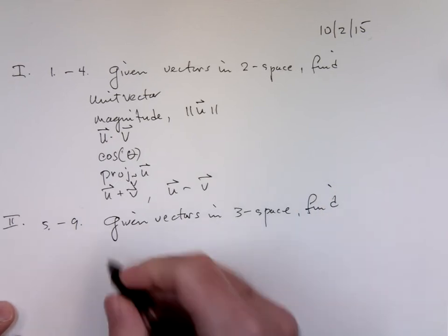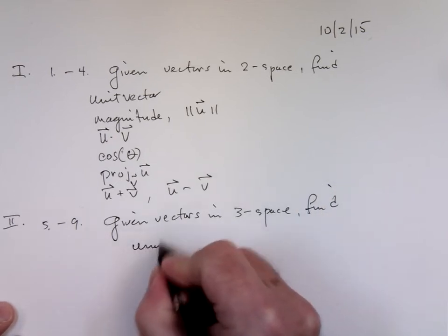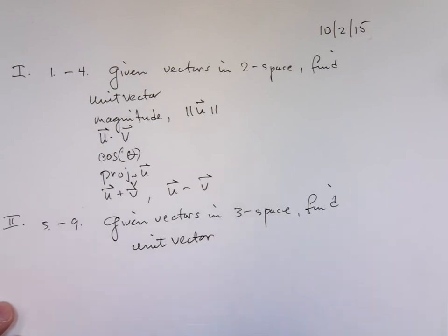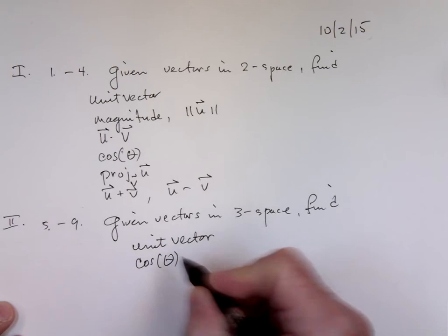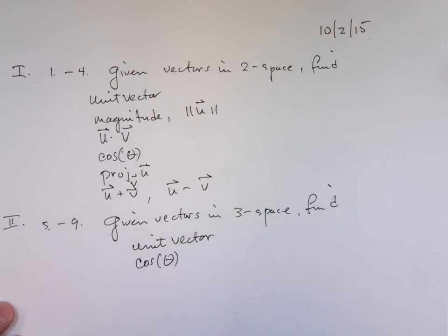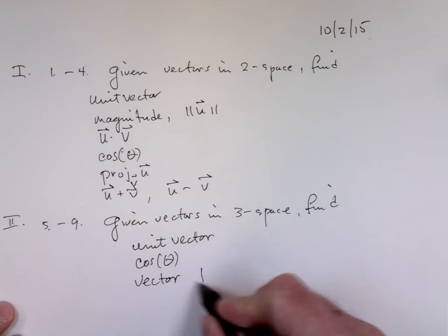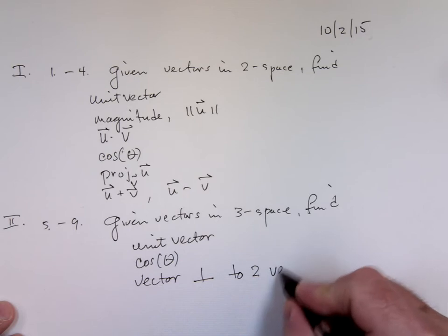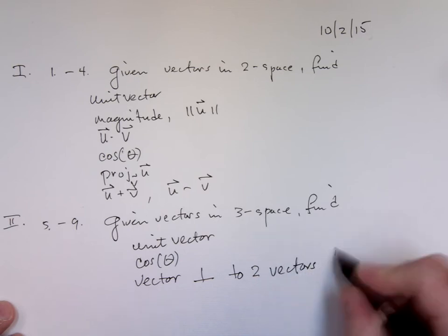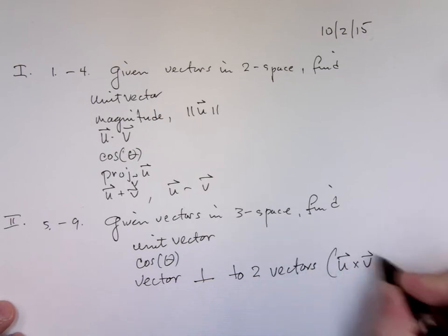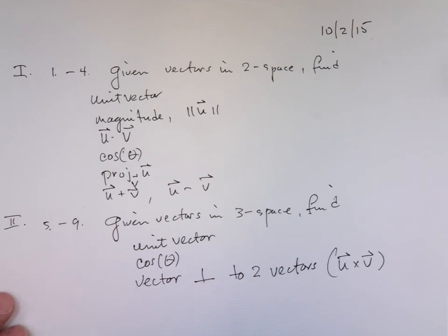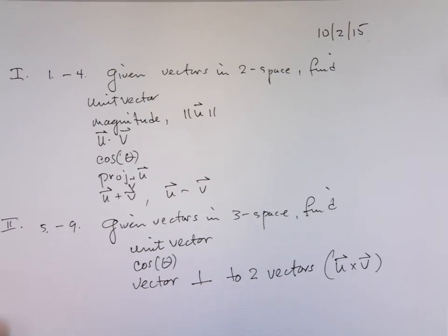Find cosine of the angle. Find a unit vector. Find the cosine of the angle between any two of those vectors. I'm going to ask for a vector orthogonal or perpendicular to two of the vectors. So what do I expect you to do here? I expect you to find a cross product. Because when you find the cross product, you will be finding a vector orthogonal or perpendicular to two given vectors.